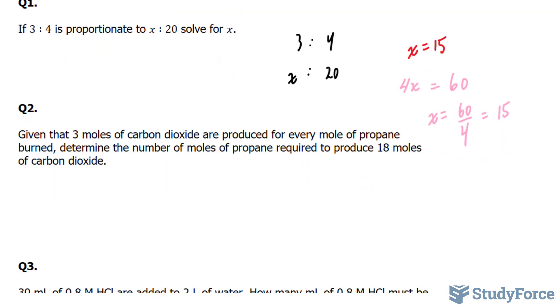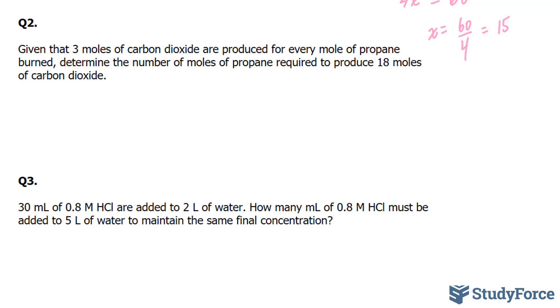Let's start with our first chemistry problem. Here we're asked, given that 3 moles of carbon dioxide are produced for every mole of propane burned, determine the number of moles of propane required to produce 18 moles of carbon dioxide. So our completed ratio is 3 to 1. 3 represents carbon dioxide moles, and 1 represents propane.